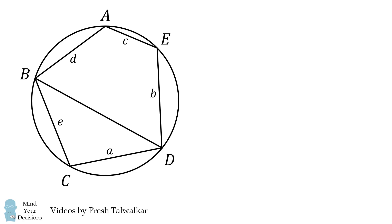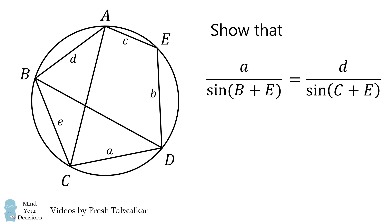Draw side BD and CA. Show that side A divided by the sine of angle B plus angle E is equal to side D divided by the sine of angle C plus angle E.